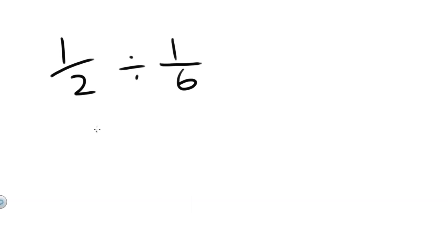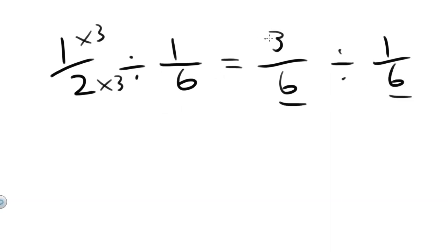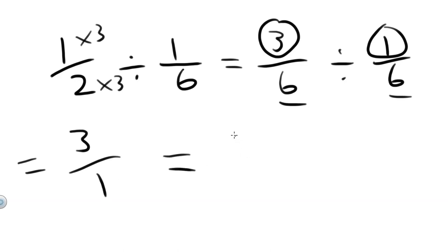Let's try the alternative method again, this time with the second question: 1 half divided by 1 sixth. Remember, the goal of the alternative method is to get the denominators to be equal. Here, if we multiply 1 half top and bottom by 3, we'll end up getting 6 on the bottom. So 1 times 3 over 2 times 3 — rewrite that: 3 over 6, divided by 1 sixth. Now that the denominators are equal, we can just rewrite the tops over each other: 3 over 1. So all of that equals 3 divided by 1, which equals 3.